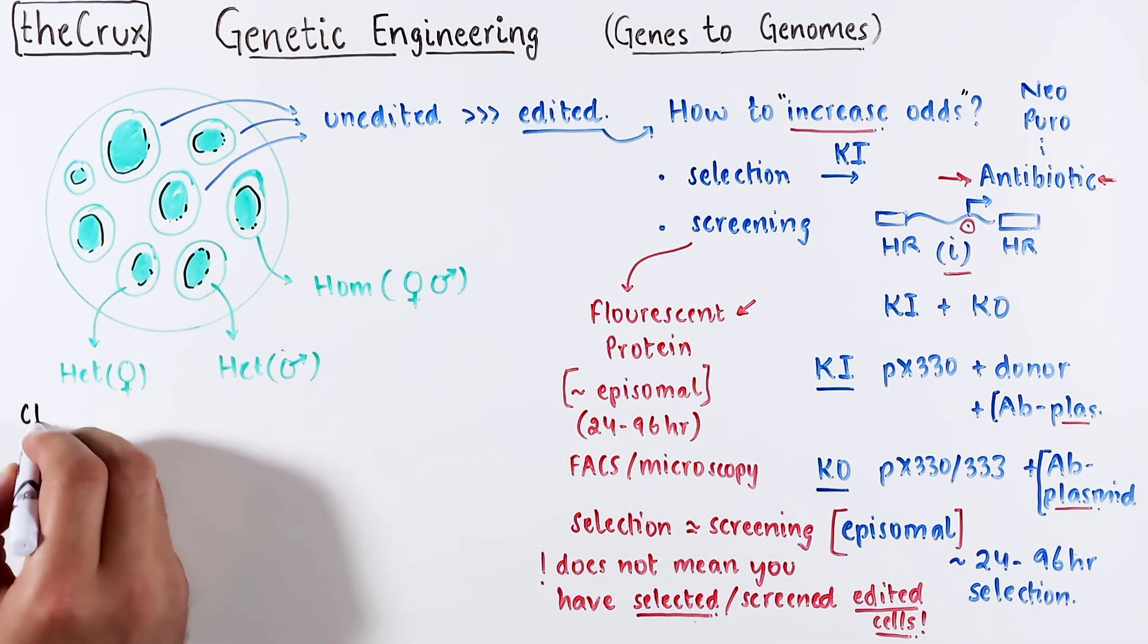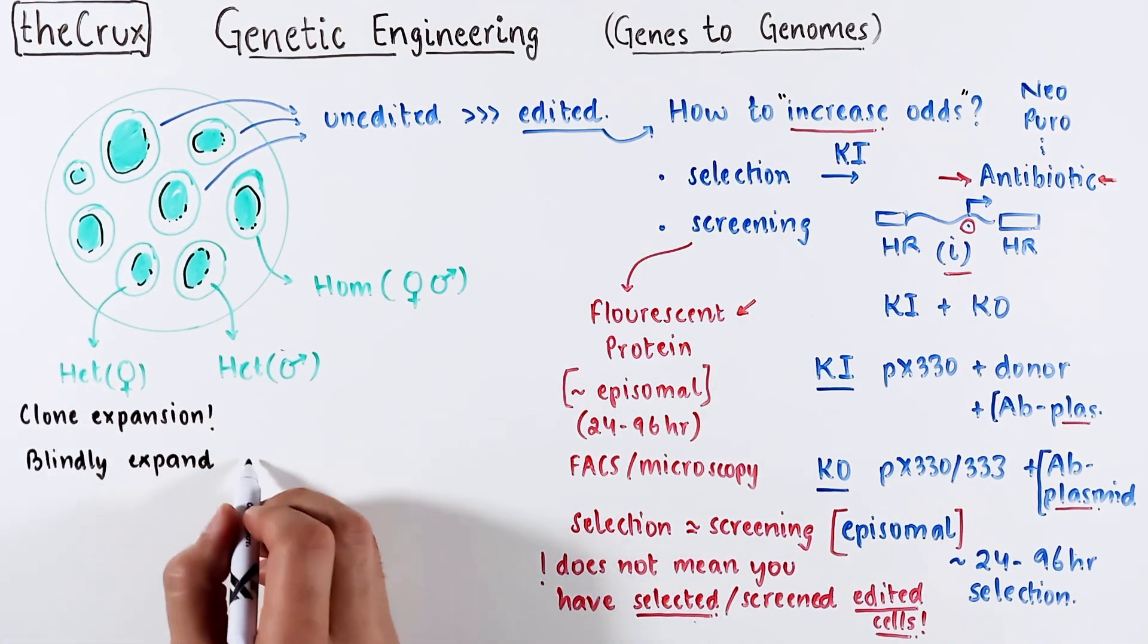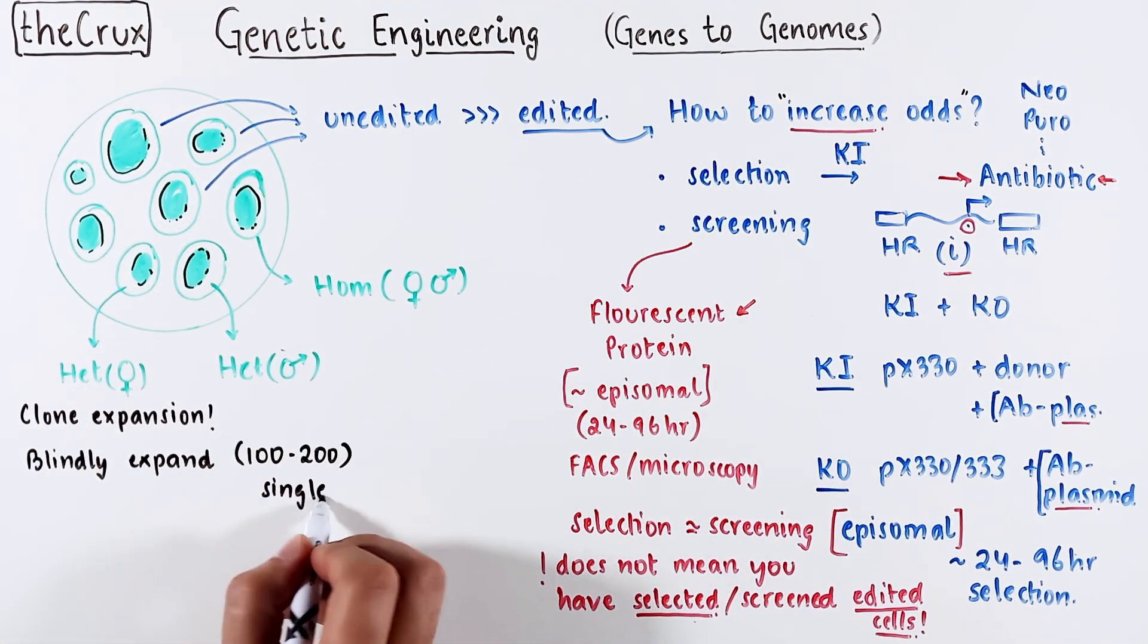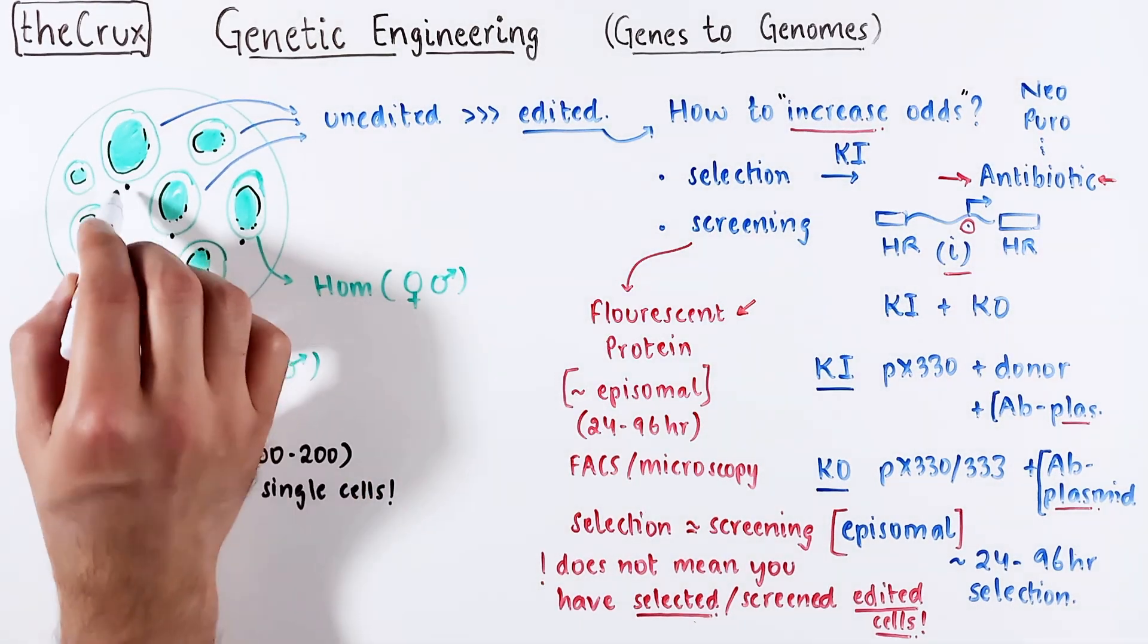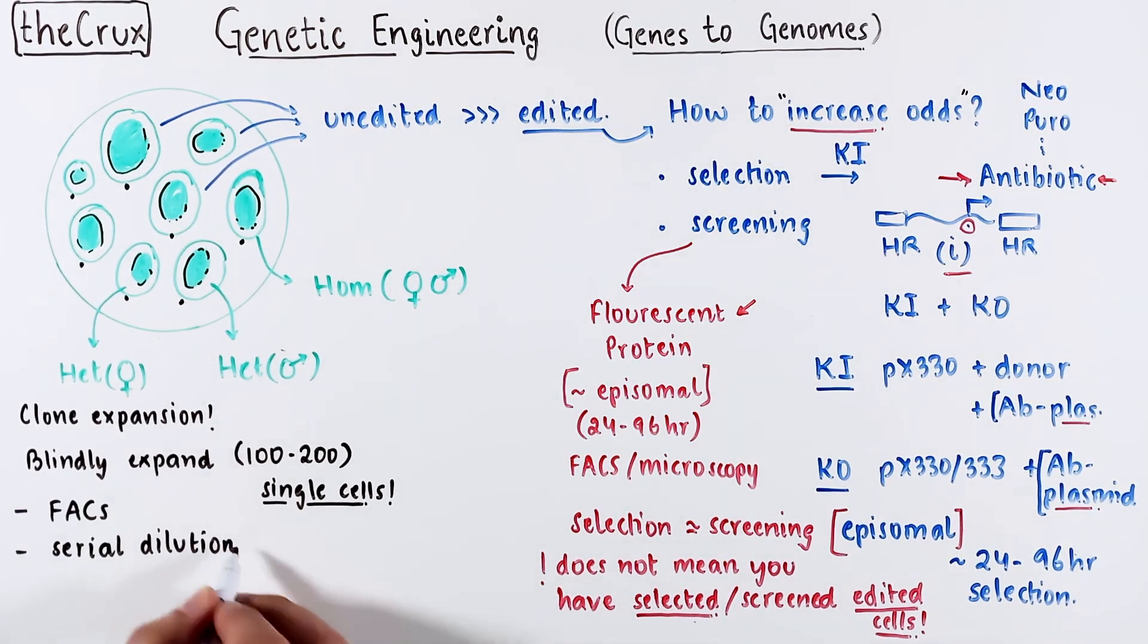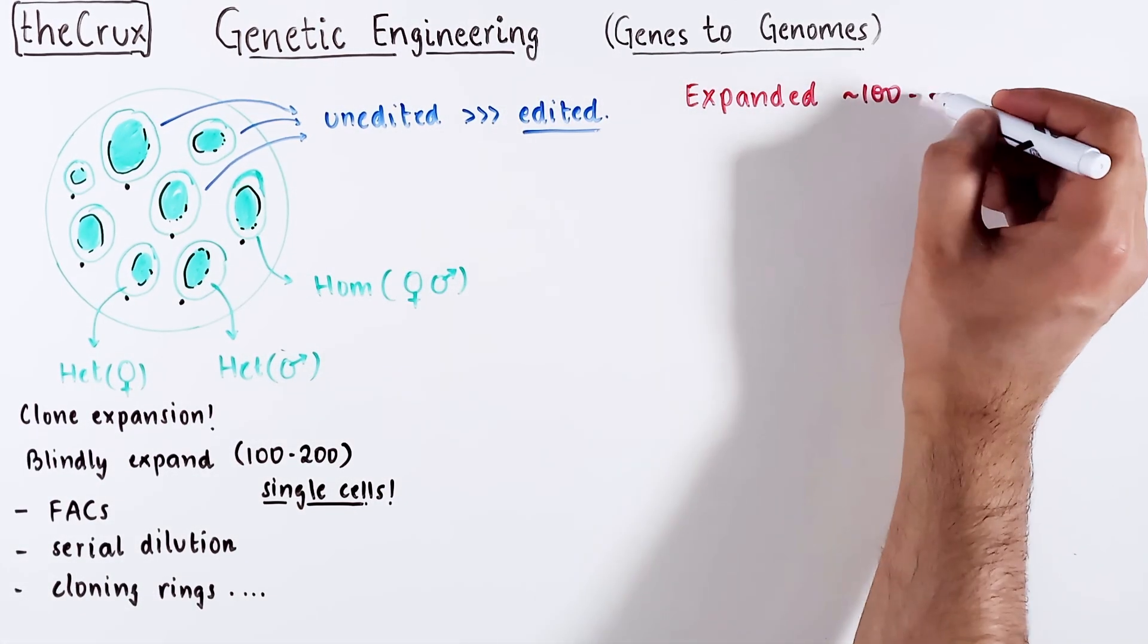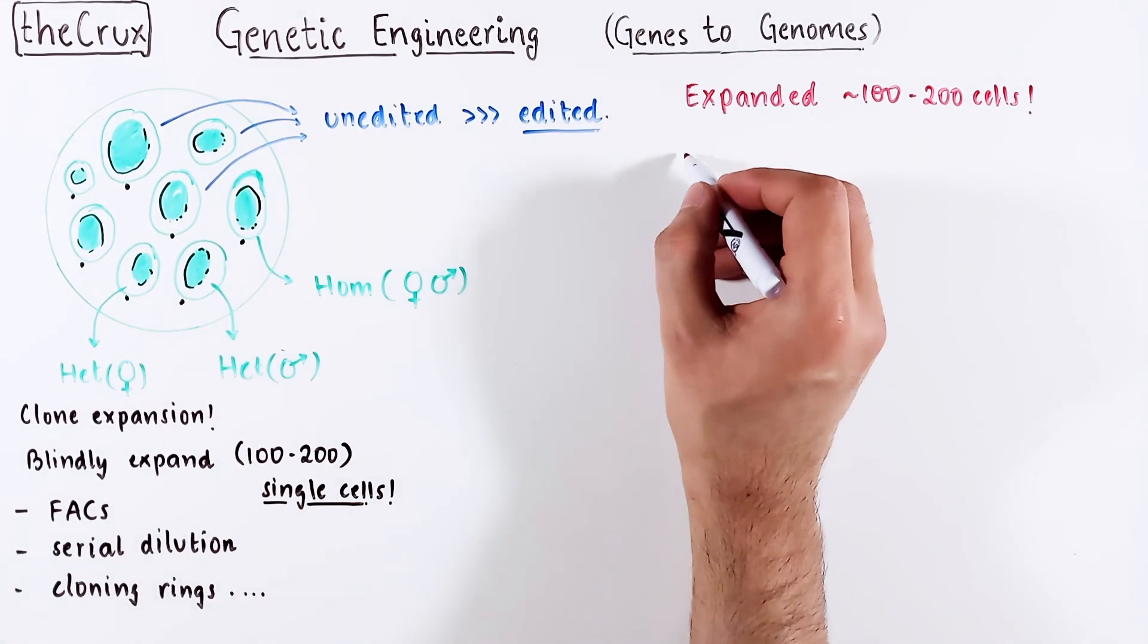After increasing the odds, it is time to isolate single cells that will become a pure cell line. For this, you blindly expand 50-200 cells. And you can get single cells using fax, serial dilution, or even single cell colonies using cloning rings or any other preferred method. Once you have 50-200 cells expanded, you extract DNA from their colonies and perform validation.